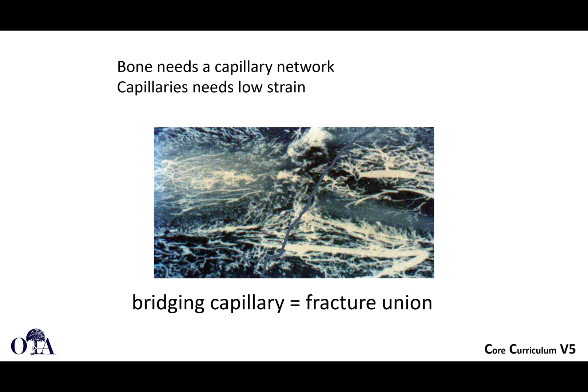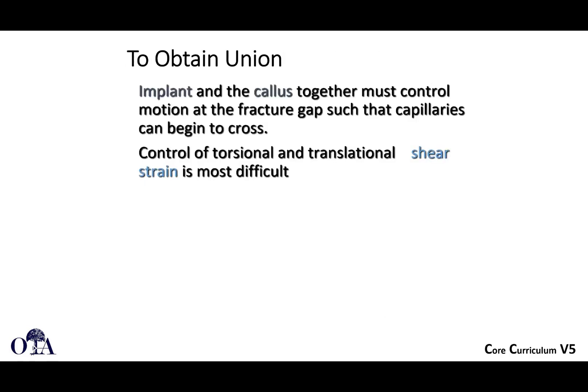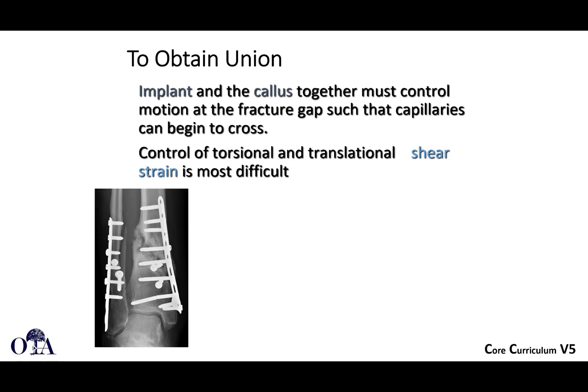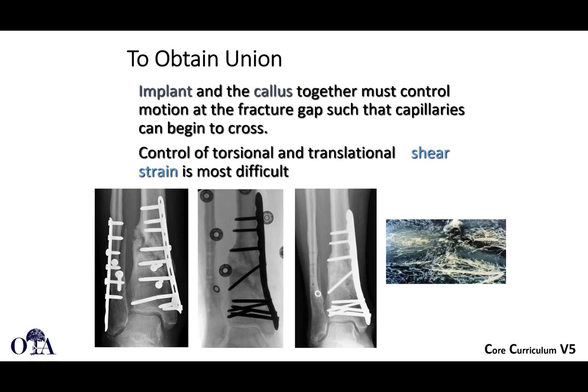Compression is a very efficient way to control shear strain through friction and interdigitation — you don't need intermediate tissues and get direct primary bone healing. To obtain union, the implant and callus together must control motion at the fracture gap so capillaries can begin to cross over. You must control torsional and translational shear strain, which is the most difficult. A case revised to more stable fixation with lag screw compression across the fracture site illustrates how this achieves union.